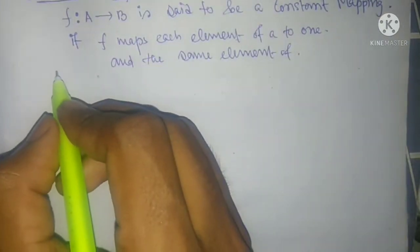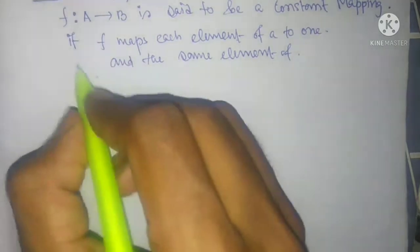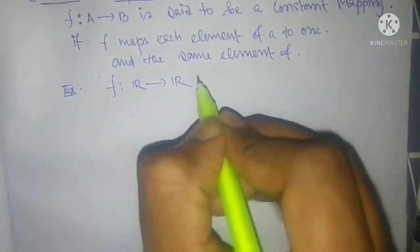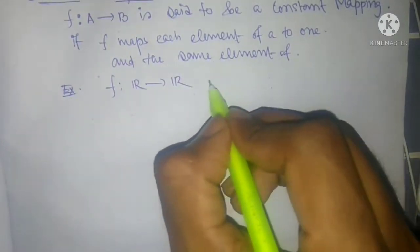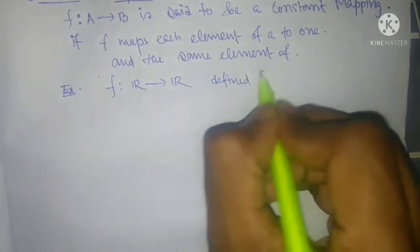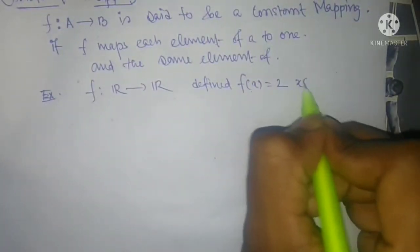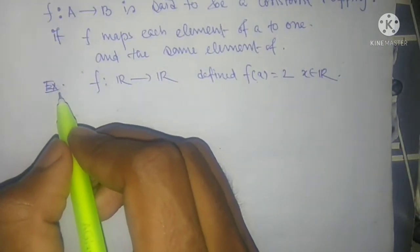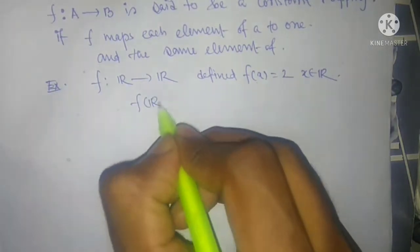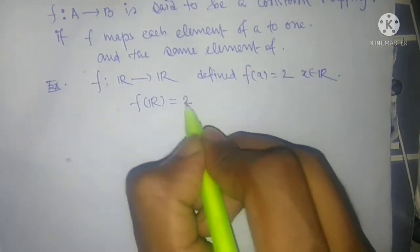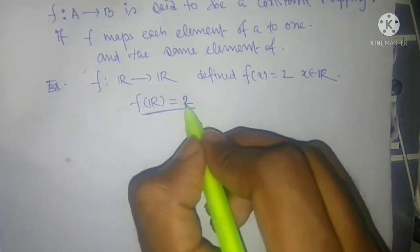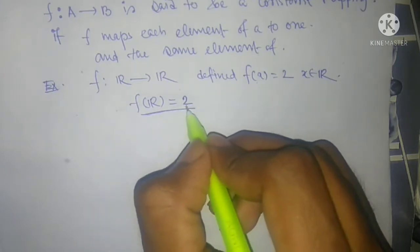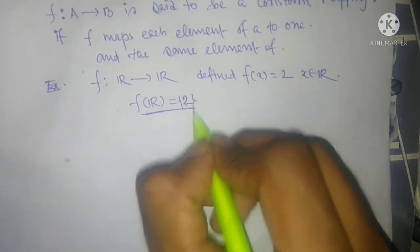Let me show you an example. A mapping f from the real numbers to the real numbers, defined by f(x) = 2 for all x belonging to the real numbers. This is a constant mapping because for any value from ℝ, we always get the constant value 2. The image is a single value, so it forms a singleton set.